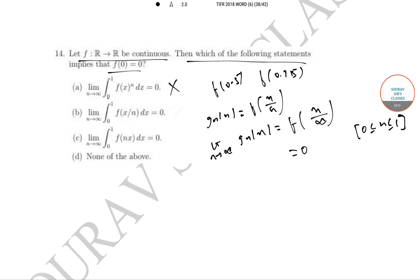Integrating the whole thing where your function is 0 gives you 0, so option B is correct. Option C: ∫f(nx)dx - when n tends to infinity, you can't necessarily say what the value of f(nx) would be; this could be very large and may not equal 0. So option B is the correct answer.